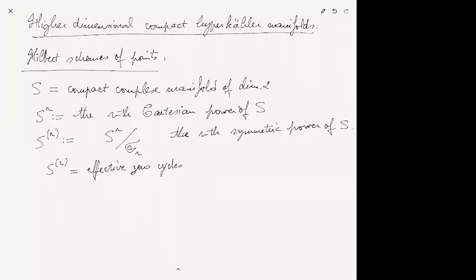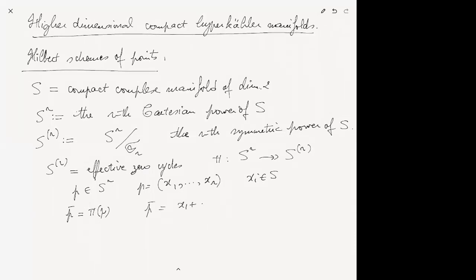A point of the Cartesian power S^r has coordinates (x₁, …, x_r) with x_i in S. If p̄ = π(p) is the image under the quotient map π, you can write p̄ = x₁ + … + x_r. If some of the x_i's coincide, you get multiplicities inside p̄.